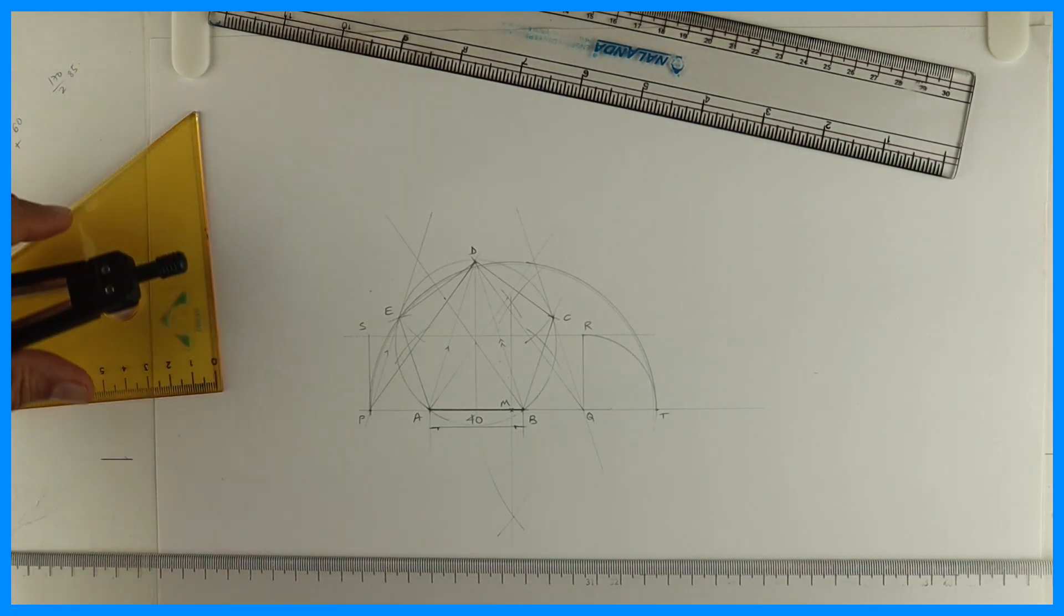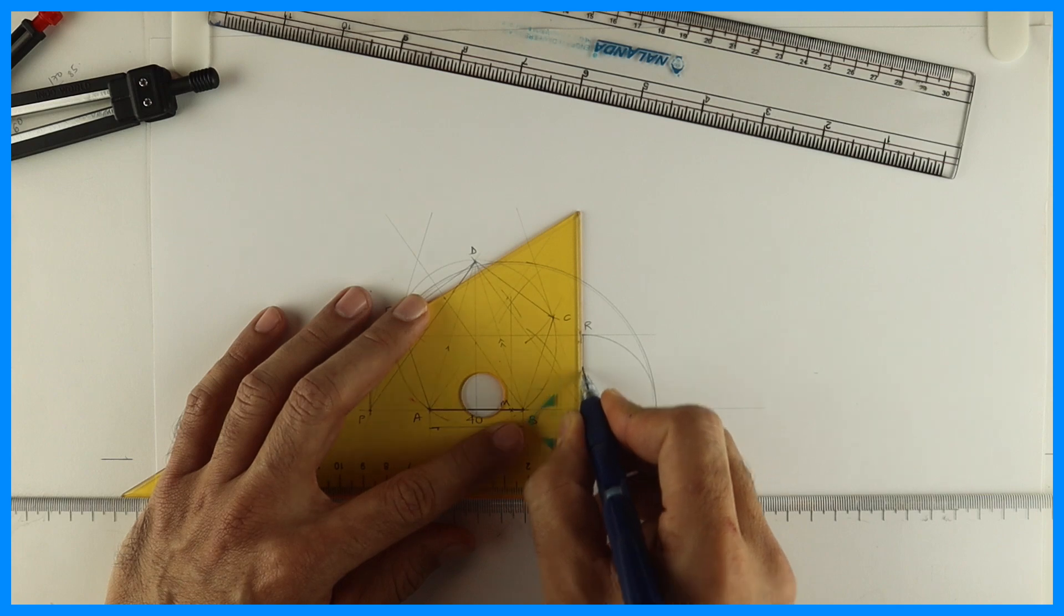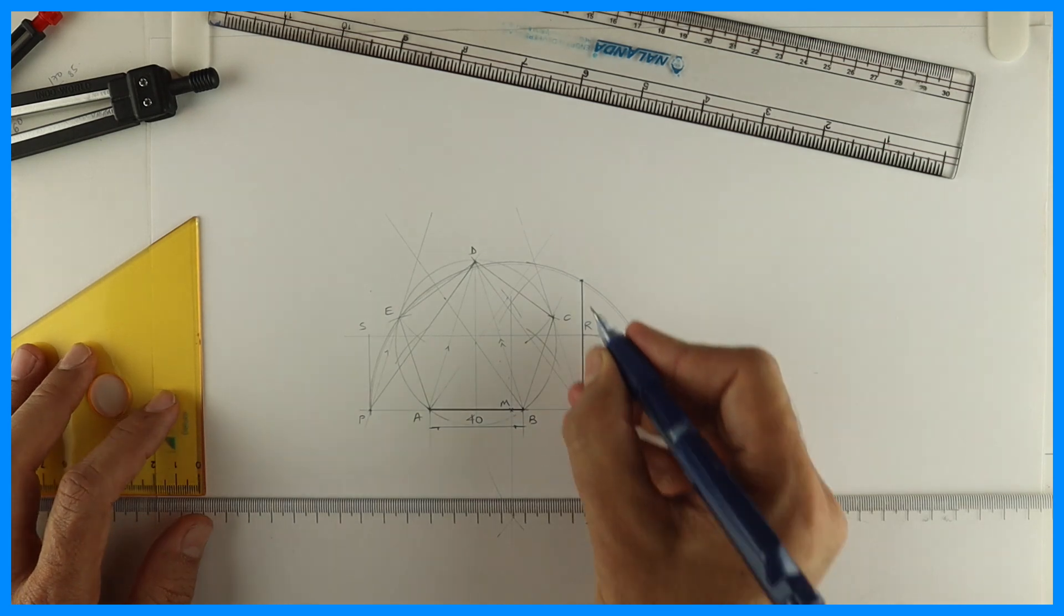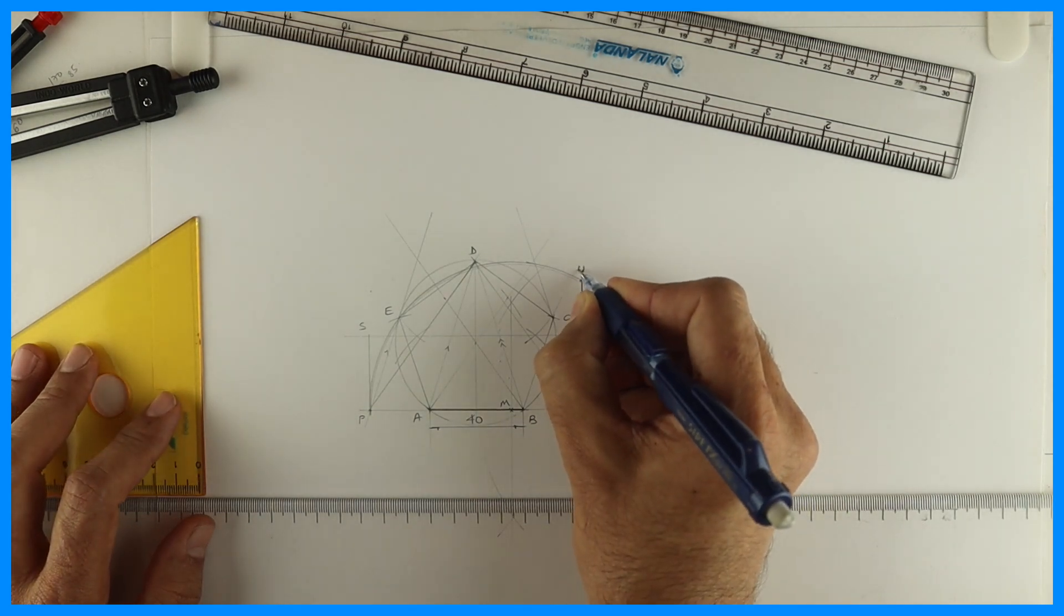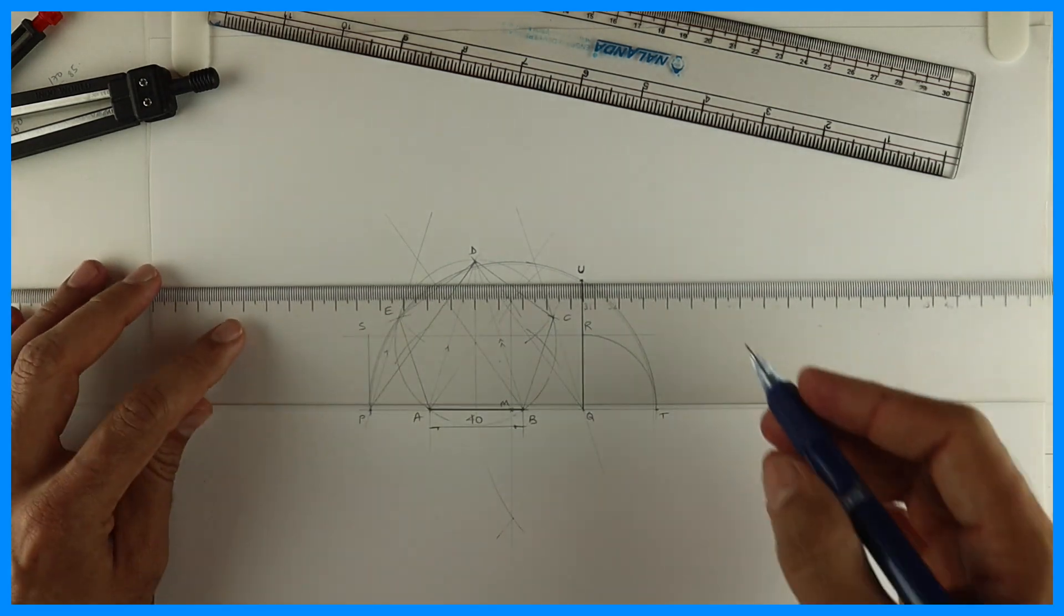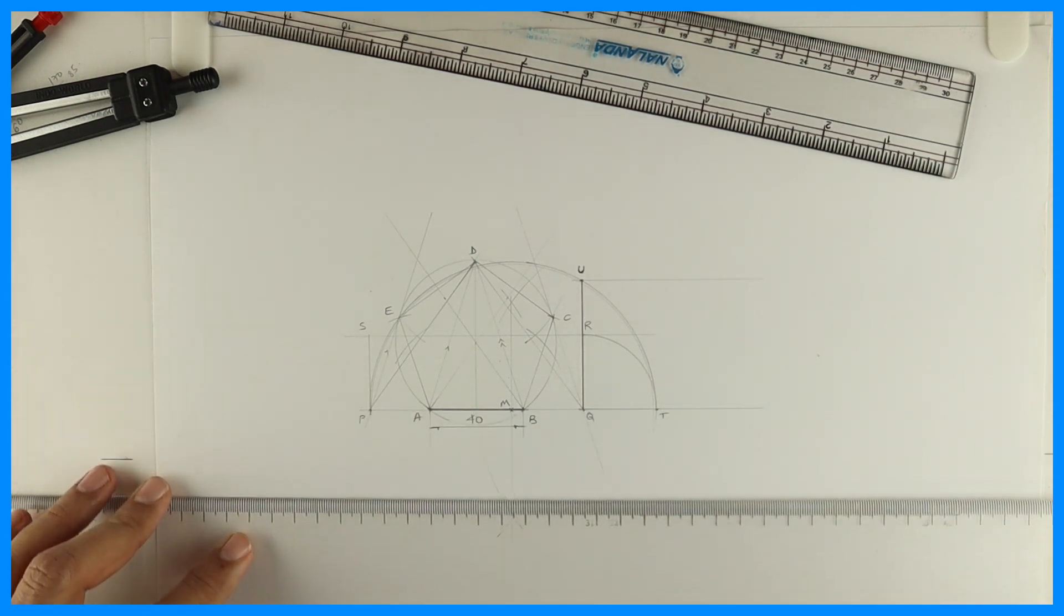Then you extend RQ. Wherever it will cut with the semicircle that will be point, let's say U. So Q and U is the side of the square.